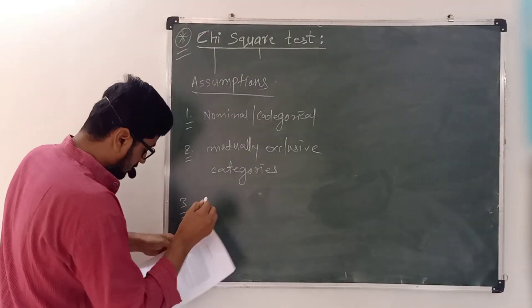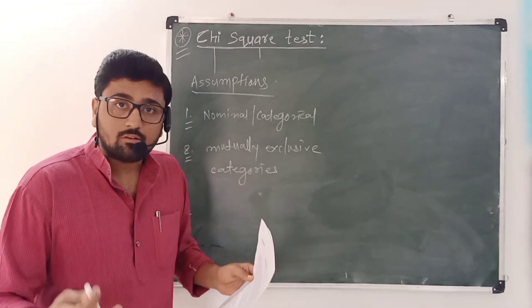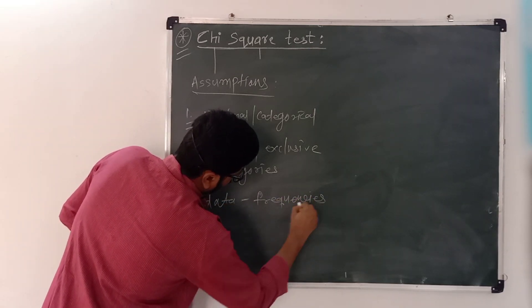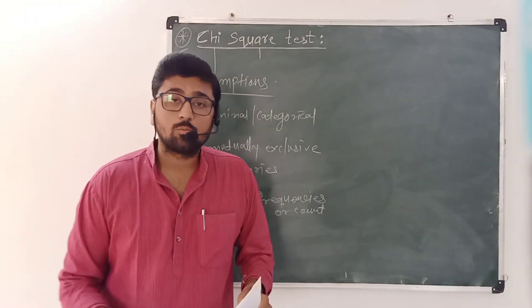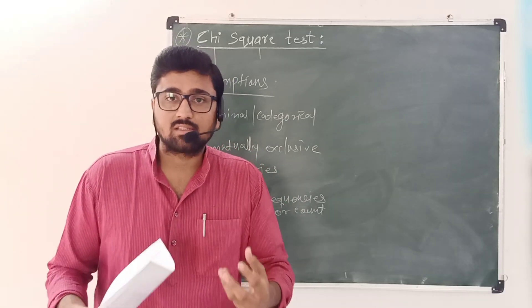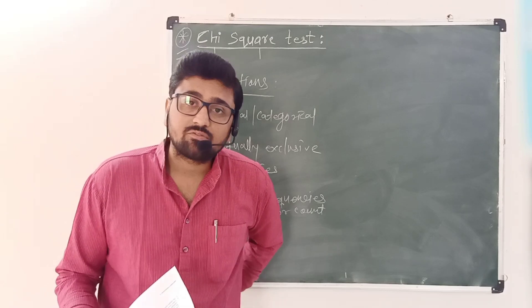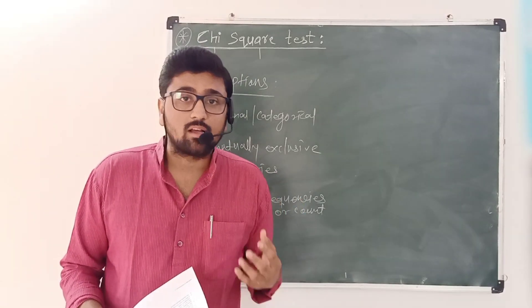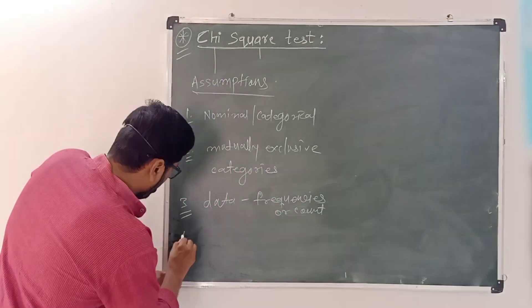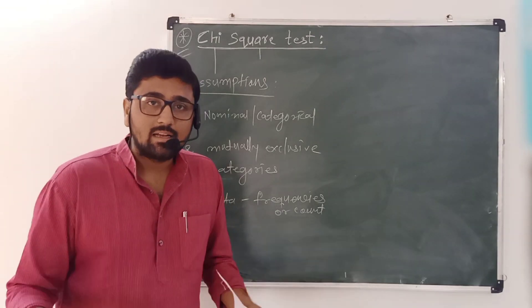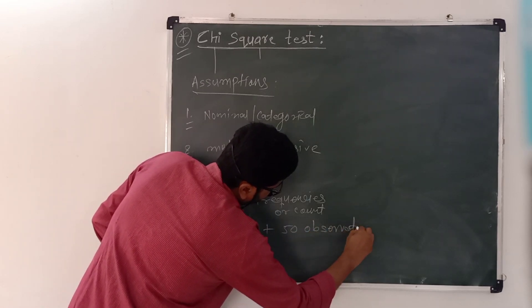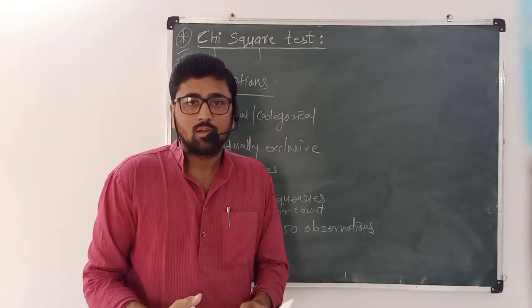The third assumption is that the data in the contingency table should be frequencies or counts. If we have data in percentage form — for example, 40% of females are not satisfied with the existing political party, or 30% of males are not satisfied — we need to convert these percentages into actual counts. The fourth assumption is that the sample should contain at least 50 observations to perform the chi-squared test.